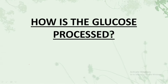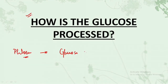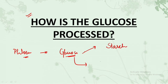Hello everyone, welcome to Botany Insider. In this lecture we will be discussing how glucose is processed. In the last two lectures we discussed phloem translocation - the glucose that is produced, if it needs to get stored, it gets stored in the form of starch, meaning glucose converts into starch. But if this glucose has to be transported, it needs to be converted into sucrose.